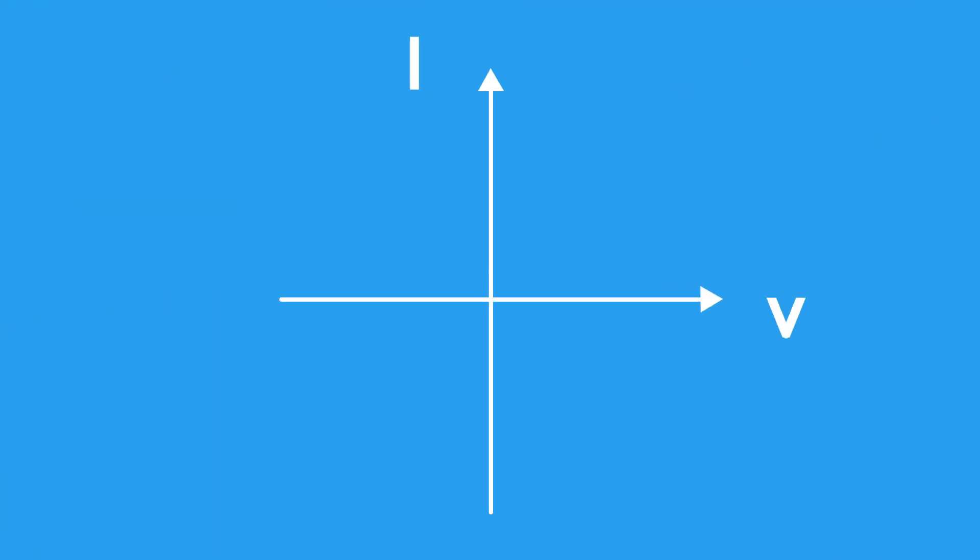Here is an IV graph for a resistor or a metal wire. The relationship between current and voltage is directly proportional. If we double the voltage, the current also doubles.